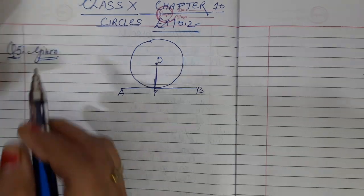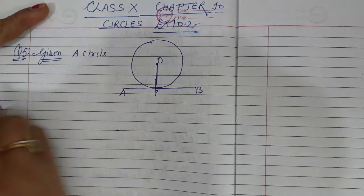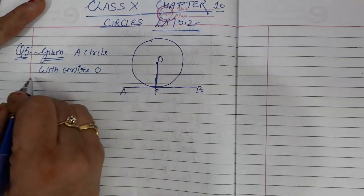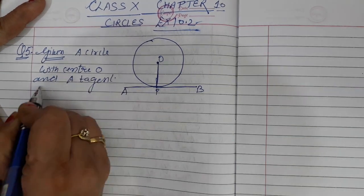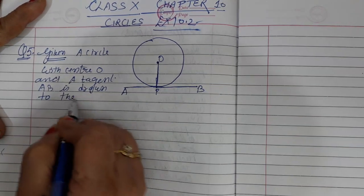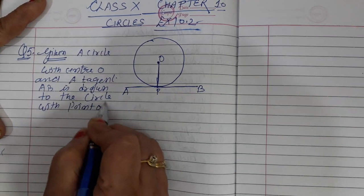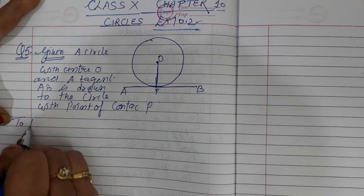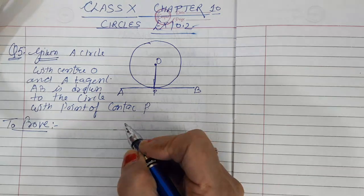Given: A circle with center O, and a tangent AB is drawn to the circle with point of contact P. To Prove: The perpendicular we drew passes through the center of the circle.